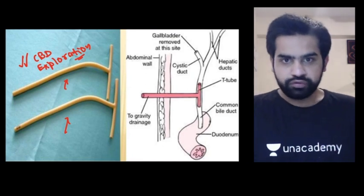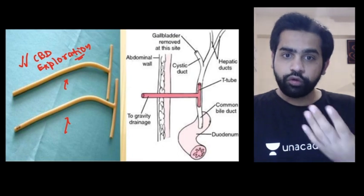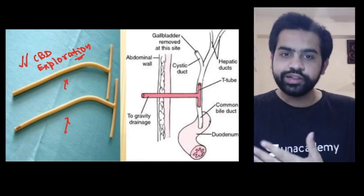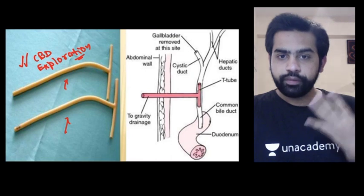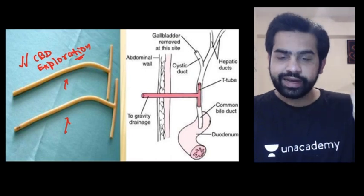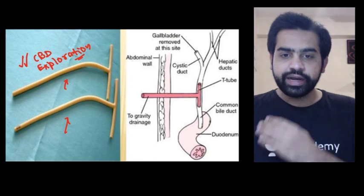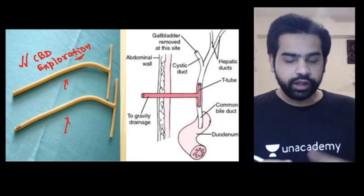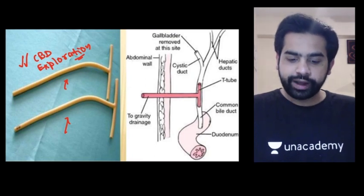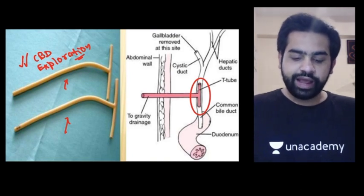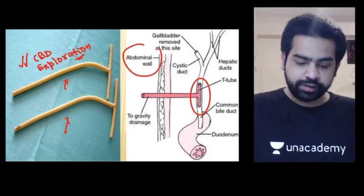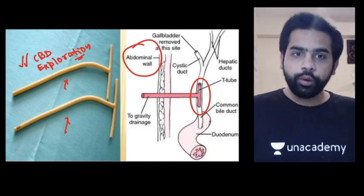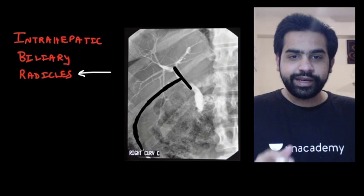Before removing the T-tube, you must confirm the entire biliary tree is free of stones. The T-tube is placed with two ends inside the common bile duct — one end towards the liver and one towards the intestine — while the third long end is brought out externally through the abdomen.